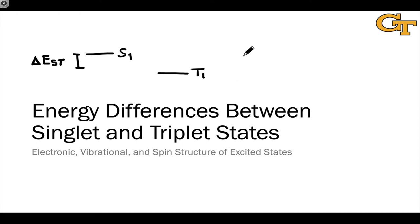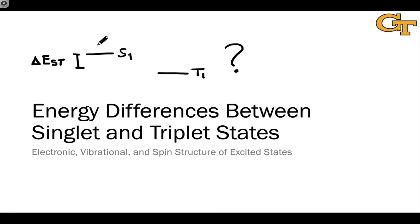The question is: why does this happen? Why is the triplet state lower in energy than the singlet state? This might seem a little bit counterintuitive given that we're used to dealing with singlet states in ground state structures on a regular basis. So what is it about the singlet state that makes it unstable relative to the triplet state?